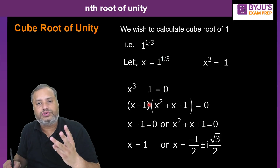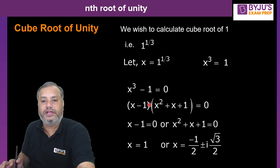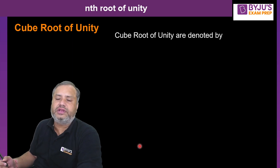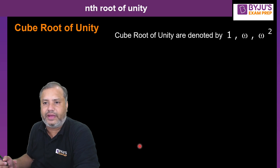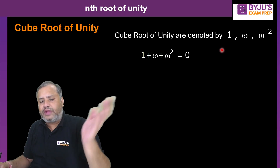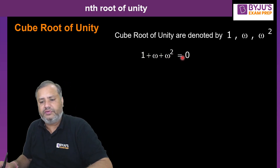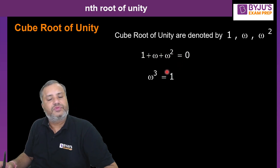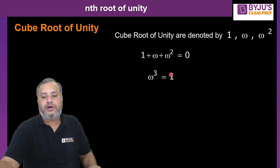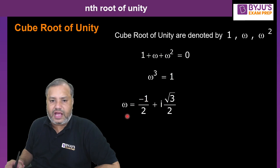We have obtained three cube roots of unity — one real root and two complex roots. The cube roots of unity are generally denoted by 1, ω, and ω². Since ω is a root of that equation, it satisfies: 1 + ω + ω² = 0. Also, since ω is a root, ω³ = 1. These are the two very important properties of the cube roots of unity.